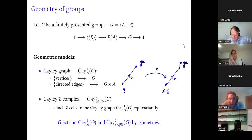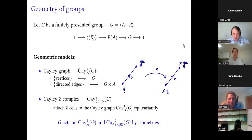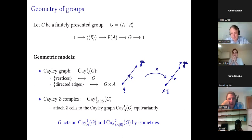The group acts on the Cayley graph by isometries — namely, it sends g to xg and ga to xga, and corresponding edges are preserved by this action. We can also obtain not just a graph but a two-dimensional space called the Cayley 2-complex. The difference is that we take the Cayley graph and attach two-dimensional cells equivariantly — attach at one vertex and then spread by the action of the group — and the resulting space also has the property that the group acts by isometries.